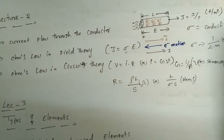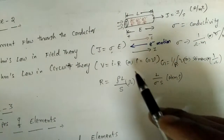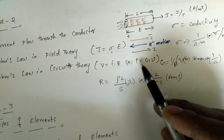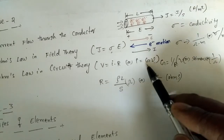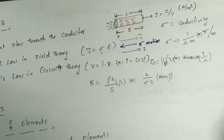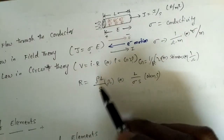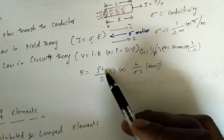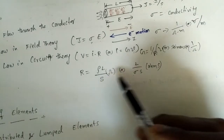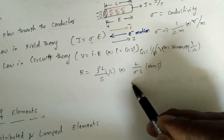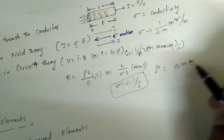The units of sigma are one per ohm-meter, or siemens per meter. Next is Ohm's law in circuit theory: the current flowing through any conductor is directly proportional to the applied voltage, so I = GV or V/R. G is conductance in siemens, and R = resistivity × length / area, where sigma equals one over rho, with rho in ohm-meters.